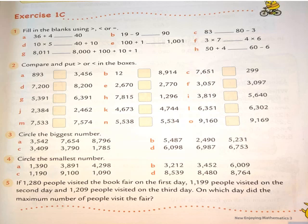Question 5 is a word problem: 1280 people visited a book fair on the first day, 1199 people on the second day, and 1209 people on the third day. On which day did the maximum number of people visit? You are given three 4-digit numbers and need to find the biggest — that tells you which day had the most visitors. I'm sure you'll solve it easily.